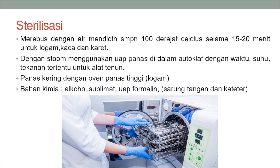Sterilisasi dengan merebus menggunakan air mendidih sampai 100 derajat Celsius selama 15-20 menit untuk logam, kaca, dan karet. Dengan steam, menggunakan uap panas di dalam autoclave dengan waktu, suhu, dan tekanan tertentu untuk alat tenun. Panas kering dengan oven, panas tinggi untuk logam. Bahan kimia: alkohol, sublimat, uap formalin untuk sarung tangan dan kateter.